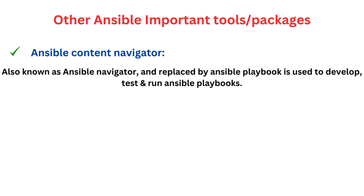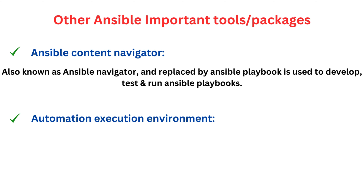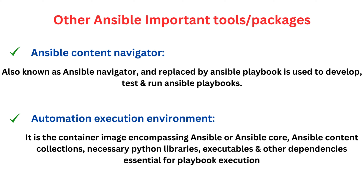The Ansible Content Navigator also separates the control node on which you run Ansible from the automation execution environment by running your playbook in a container. The automation execution environment is a container image encompassing Ansible core, Ansible content collections, as well as the necessary Python libraries, executables, and other dependencies essential for playbook execution. With Ansible Navigator, you have the option to choose a specific execution environment for running your playbook.